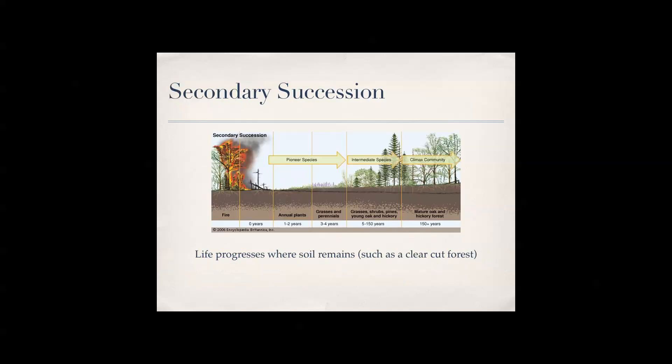Secondary succession is like when a fire burns down a forest — it doesn't burn the soil, so the soil is still there. Primary succession has no soil; secondary succession still has soil, so there's much less time to reach your climax community. You'll have pioneer species, some lichen, some grasses already, and looking at the graph, you reach your climax community at about 150 years, compared to approximately 300 years for primary succession.